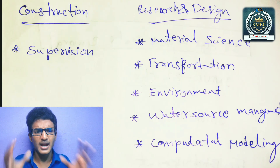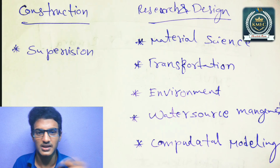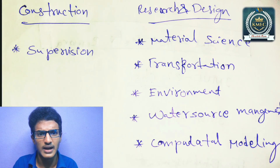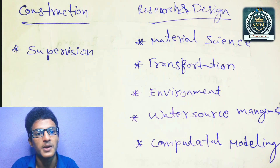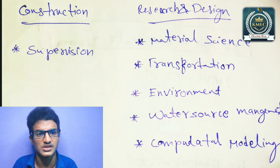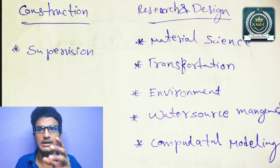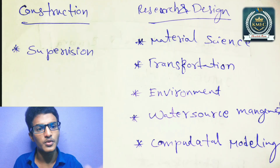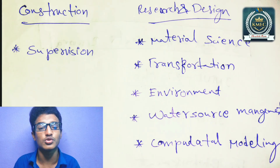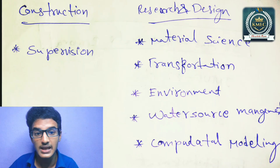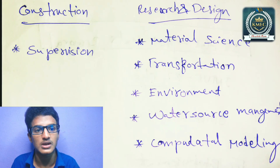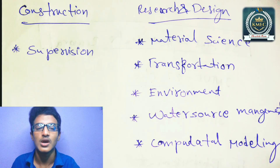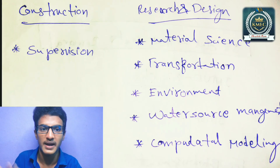Specializations in civil engineering include material science, transportation, environment, water source management, and computational modeling. You may be interested in water source management, computer modeling, infrastructure, designing with computer knowledge, environment, transportation, or material science.